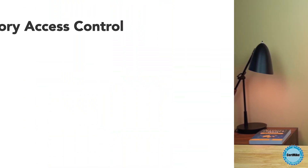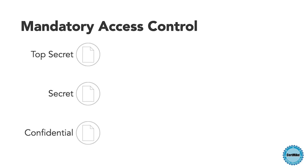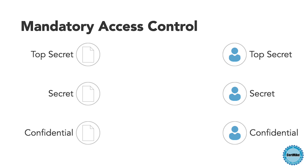Let's take a look at a MAC system in action. U.S. government applications often use mandatory access controls to protect classified information. In this approach, documents and users are each assigned a classification level. Documents might be labeled as top secret, secret, or confidential, depending upon the sensitivity of the information that they contain. Users are labeled top secret, secret, or confidential, based upon their security clearance — the sensitivity of information that they are authorized to access.